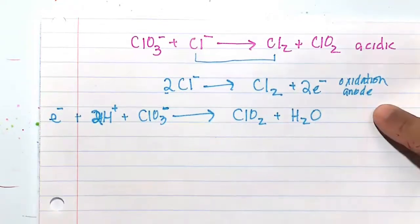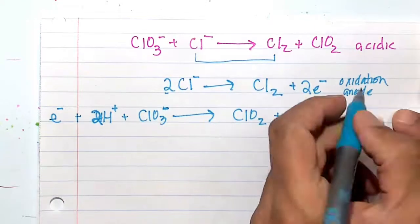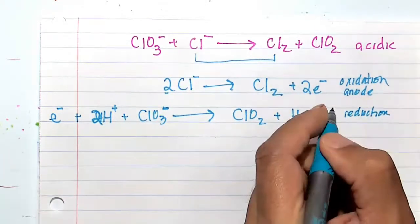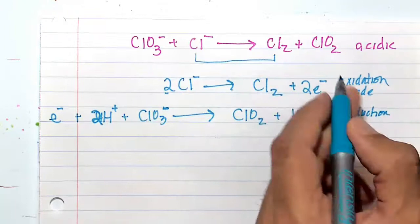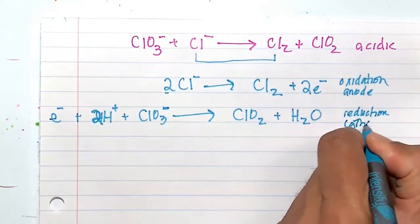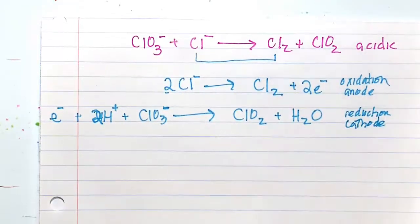So you gain an electron here. This is also known as a reduction half reaction. And this is where the cathode occurs if you're talking about a battery.